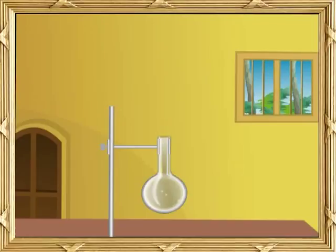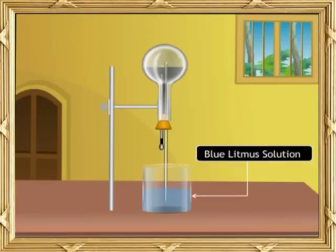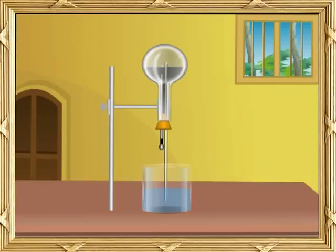See, the round bottom flask is filled with sulphur dioxide. This is a jet tube. Dip the bottom end of the jet tube in blue litmus solution. The ink filler contains water. Now, press the rubber cover to release water.